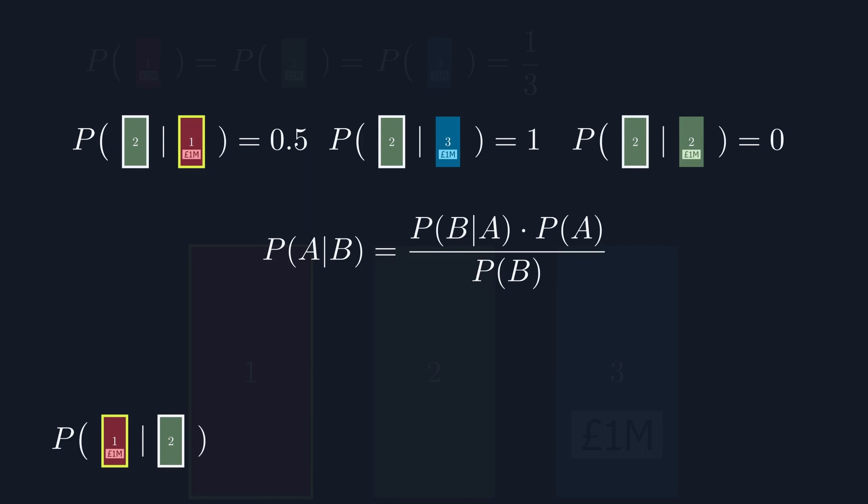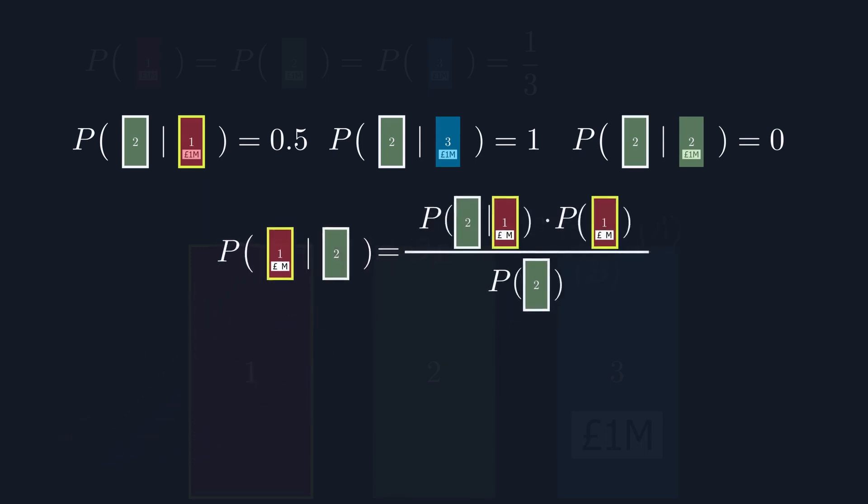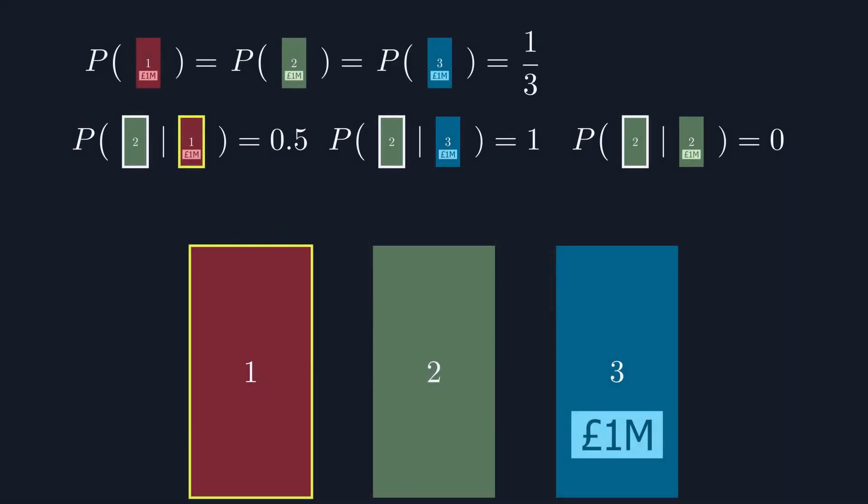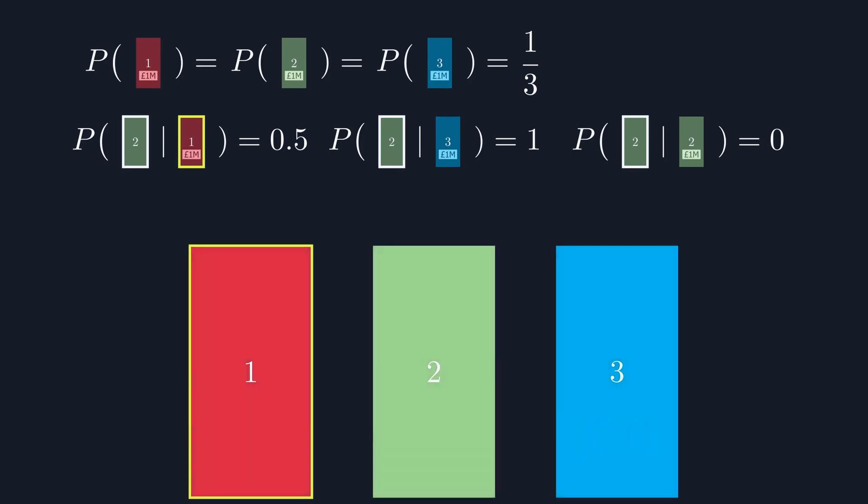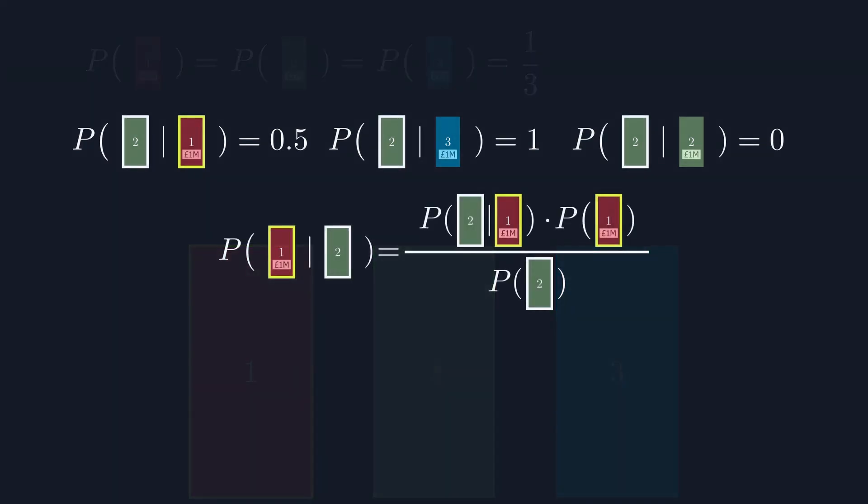This formula allows us to update a probability based on new information. In our case, we can update the probability of the money being behind door one, based on the new information that door two was opened. The only problem is that this requires us to have a general probability for door two being opened. Fortunately, this is quite easy to work out. By making our doors opaque again, it's clear that there's no way to ascertain which door the game show host is going to open. We don't know where the money is. So the probability of door two being opened, given no other information, is one in two.